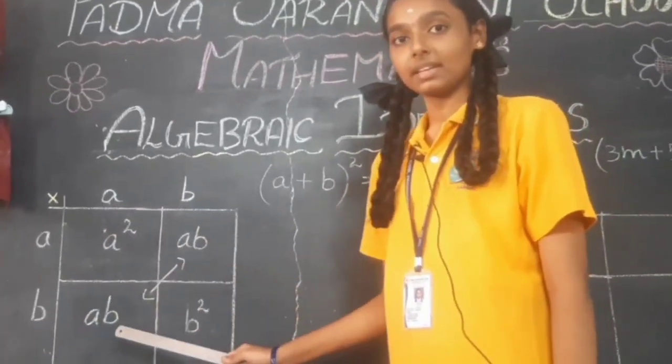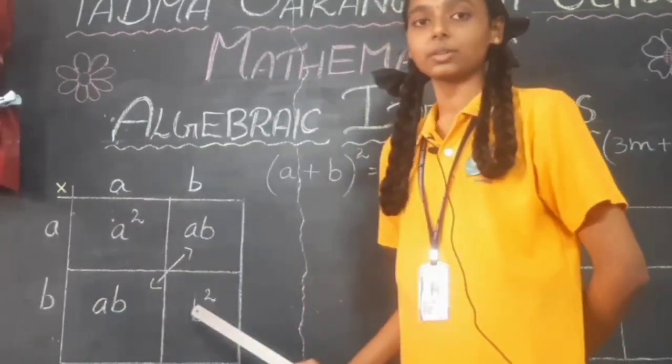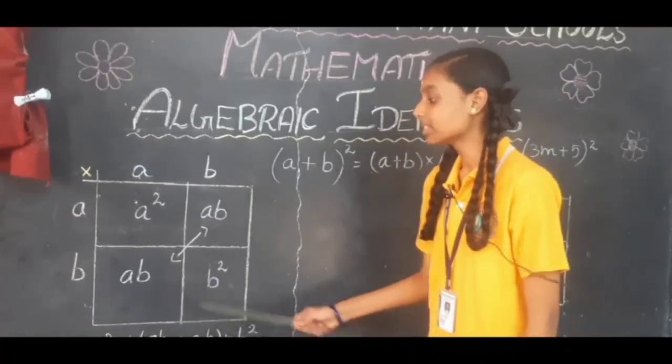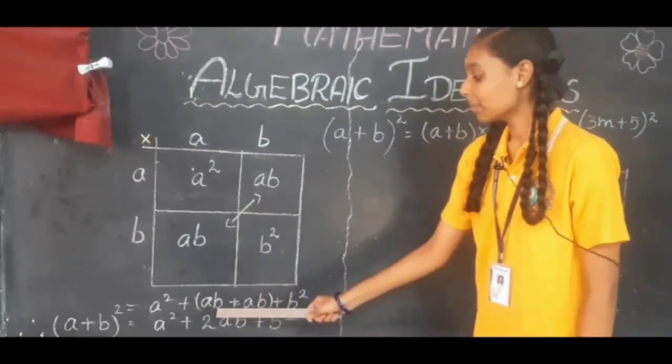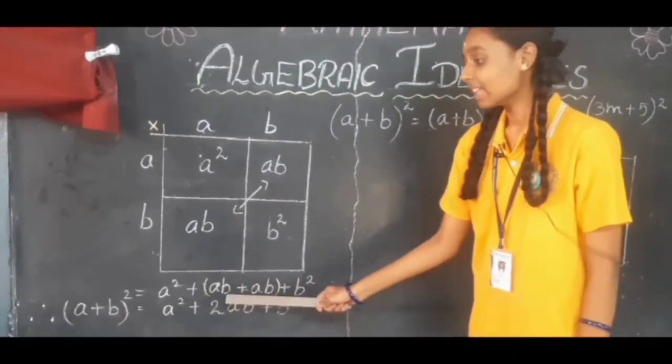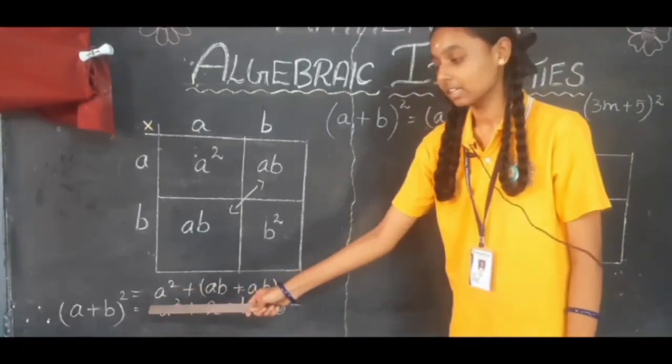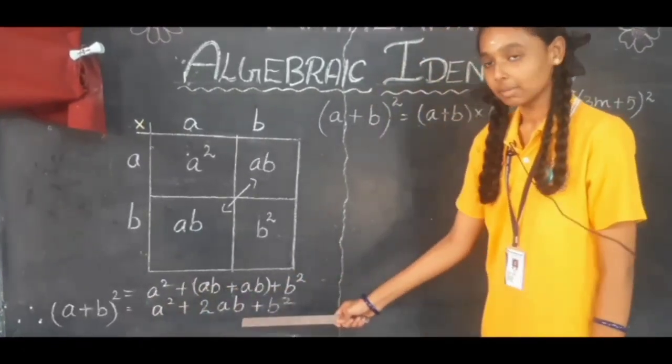Then we have to add the like terms AB and AB. AB plus AB gives 2AB. Therefore, A plus B the whole square gives A square plus 2AB plus B square.